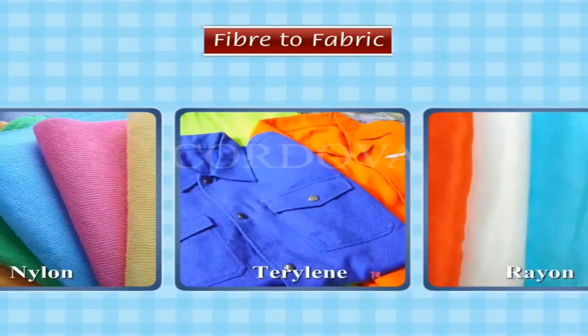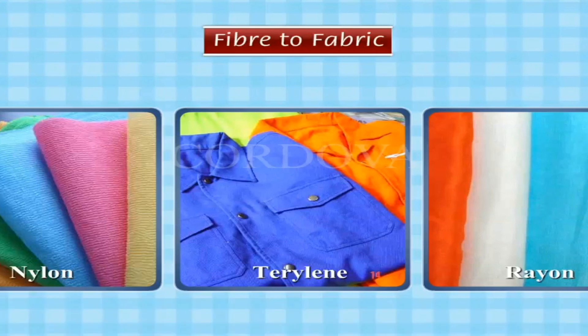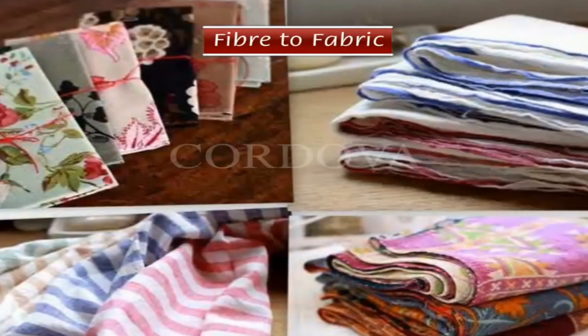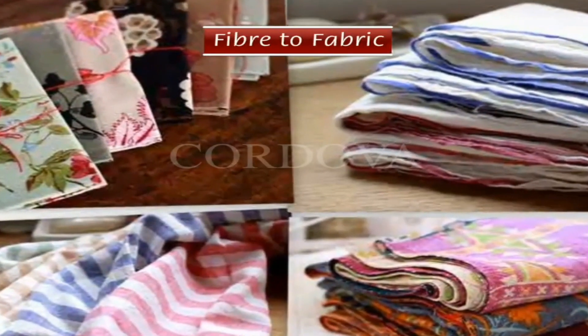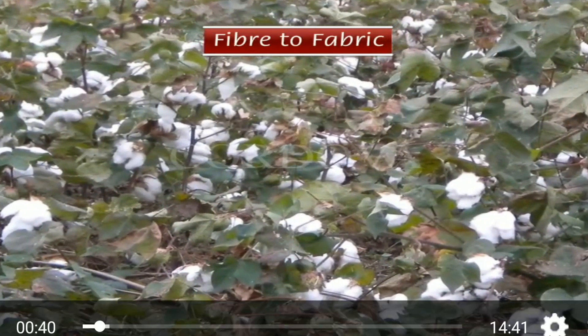Terylene and Rayon are some of the man-made or synthetic fibers. Man-made fibers are made from terylene, rayon, nylon, etc. Fibers are made from different kinds of fabric.